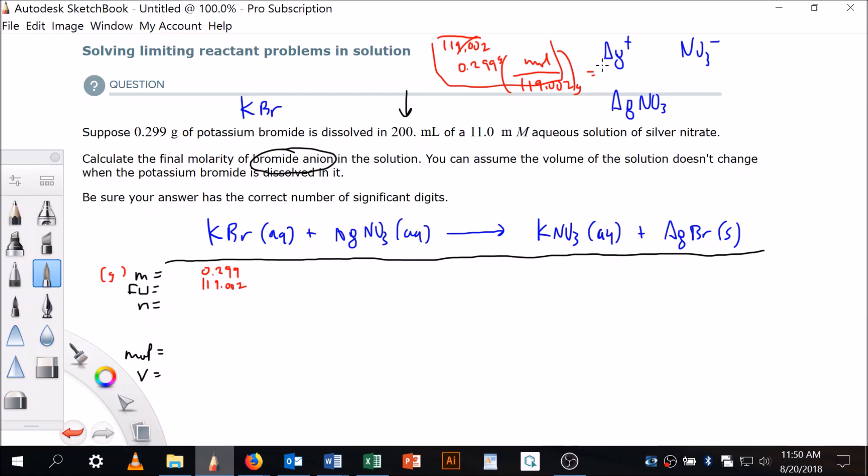0.299 grams, 119.002 grams per mole is equal to—gotta do this in my calculator. 0.299 divided by 119.002, 0.00251, so this, the moles here, is 0.0025—I'm going to just say 0.00253.